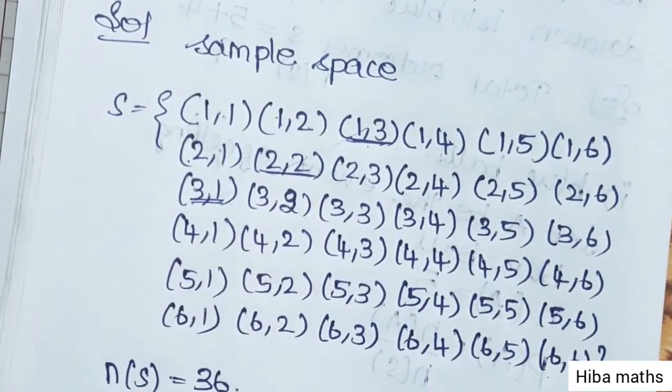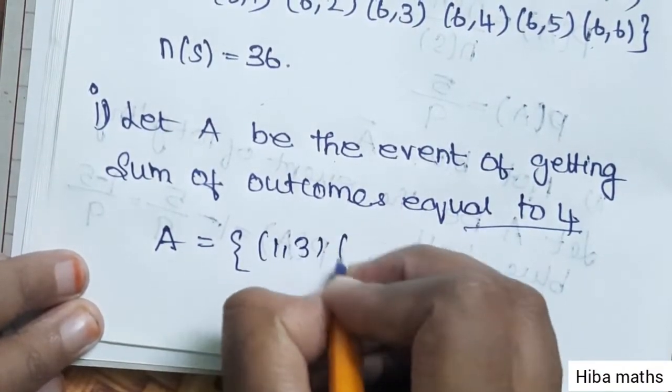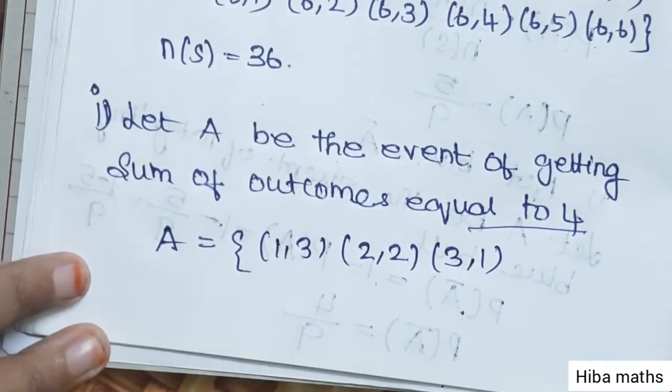So the outcomes are: (1,3), (2,2), and (3,1).